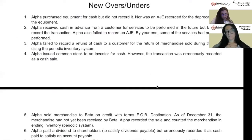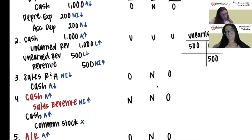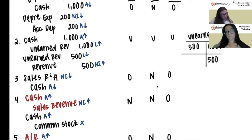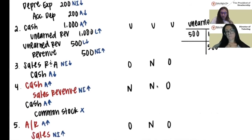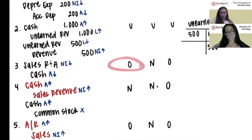Number three: Alpha failed to record a refund of cash to a customer for the return of merchandise sold during the year using the periodic inventory system. They should have debited sales returns and allowances and credited cash. Sales returns and allowances is a contra sales account, so it lowers net income. A credit to cash lowers assets. Since assets should have been lowered but weren't, assets are overstated. No effect on liabilities. Net income should have been decreased but wasn't, so net income is overstated.